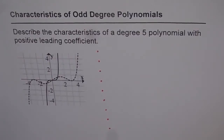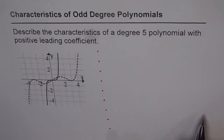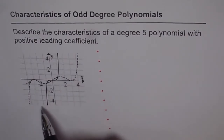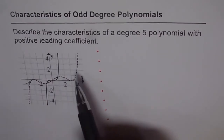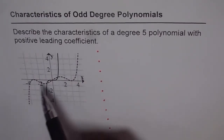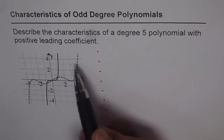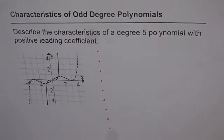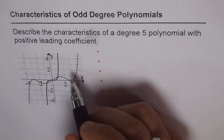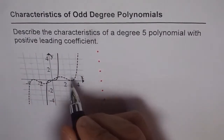Let's describe the characteristics of odd degree polynomials, specifically a degree 5 polynomial with positive leading coefficient. Most of the characteristics defined here will be applicable for any odd degree polynomial, and some will be specific. When you look at the two graphs shown here, both are degree 5. You notice that the graph goes from quadrant 3 to quadrant 1 — the ends face opposite sides — which tells us it is an odd degree function with positive leading coefficient.